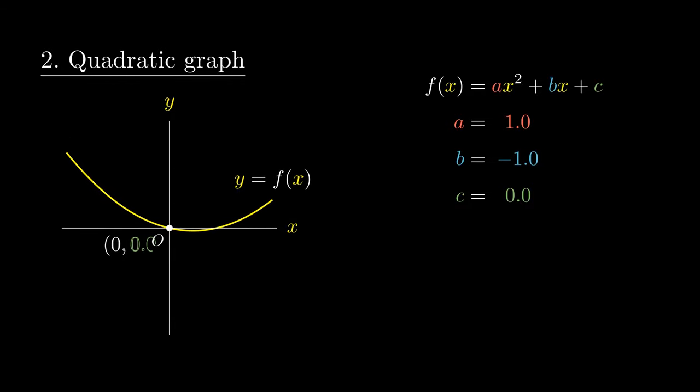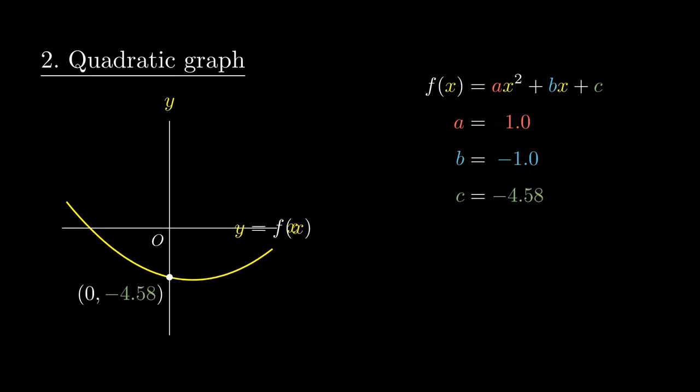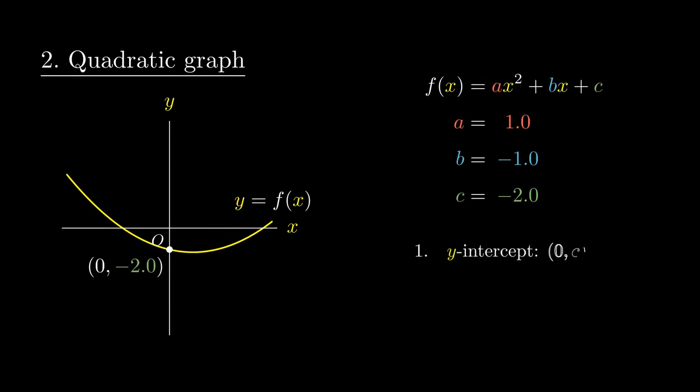Finally, the number c plays a very similar role that it did in the linear graph situation. It tells us where this graph is located, and is encoded via the y-intercept 0, c. This graph has a special point called the turning point, and is usually denoted by the symbol h, k.